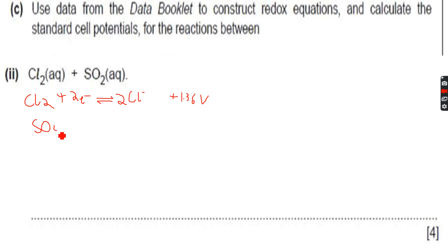There is only one reaction with SO₂ in the data booklet, so SO₄²⁻ plus 4H⁺ plus 2 electrons gives SO₂ plus 2H₂O. This is plus 0.17 volts. You can see that both of them are in aqueous phase and we have an H₂O over here, so this should indicate that whatever we are doing is correct till now.